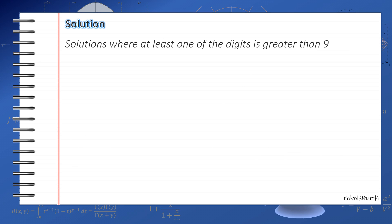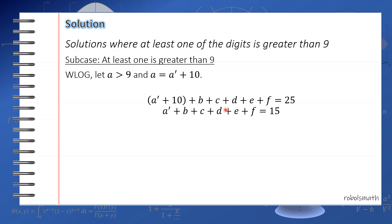First we solve for the number of cases where at least one of the digits is greater than 9. Now for this one, we first consider the case where at least one is greater than 9. So if that's the case, we set without loss of generality that a is greater than 9. So a is equal to a prime plus 10. Again, we use this substitution because we want a to be at least 10. Because if a prime equals 0, then a equals 10, which satisfies the constraint that we want, that a is greater than 9. So using this substitution, a prime plus 10 plus b plus c plus d plus e plus f is equal to 25. Simplifying this gives the sum of these variables is equal to 15. So again, by the stars and bars, this total is equal to 15 plus 6 minus 1 taken 6 minus 1 is equal to 20 taken 5.